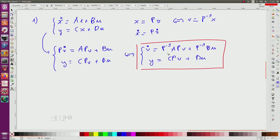D has not changed, but the matrix A, B and C have changed. But the system from the input and the output are totally equivalent.